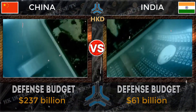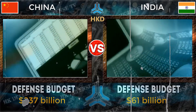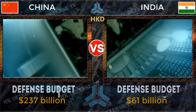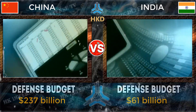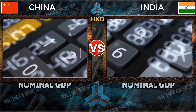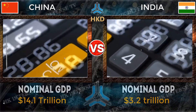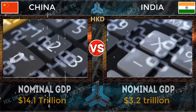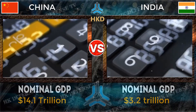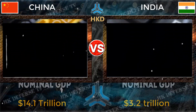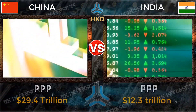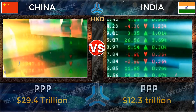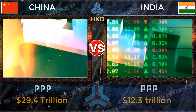Defense budget: China 237 billion USD and India 61 billion USD. Nominal GDP: China 14.1 trillion USD and India 3.2 trillion USD. Purchasing power parity: China 29.4 trillion USD and India 12.3 trillion USD.